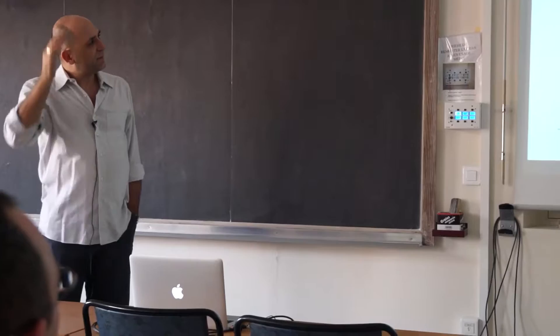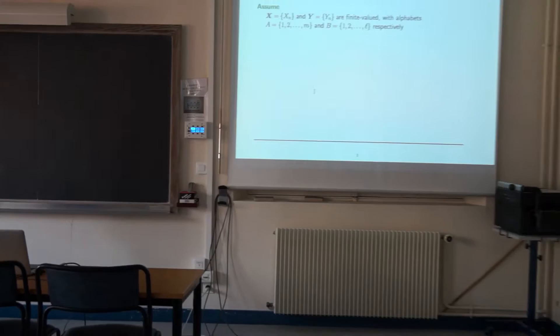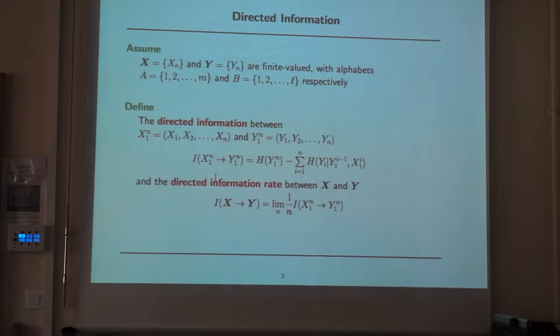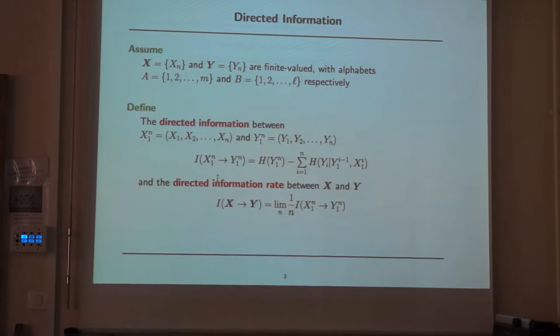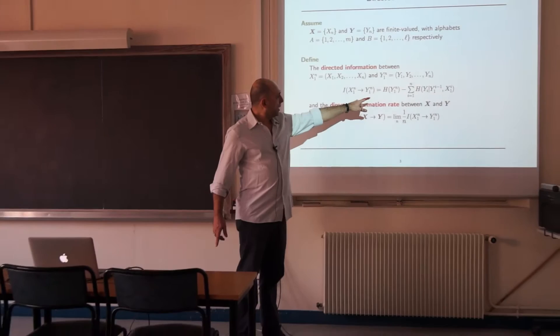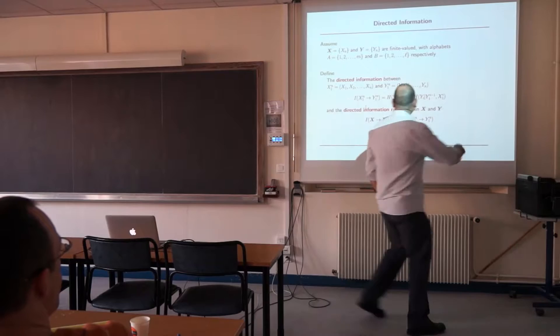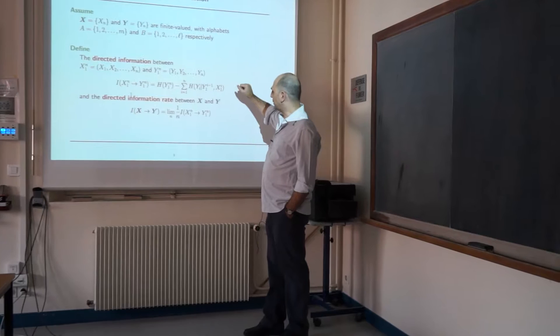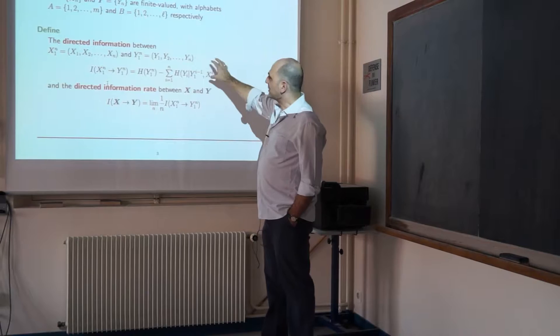Let me start by defining exactly what directed information is. We have two time series X and Y, and we take them to be finite valued with possibly different alphabets. The directed information between the block X1^N and Y1^N is defined as the entropy of the block Y minus the sum of the causally conditional entropies of each Y_i given its own past and the X sequence up to time i. For the entire process, one likes to talk about the directed information rate — we divide by N and take the limit.